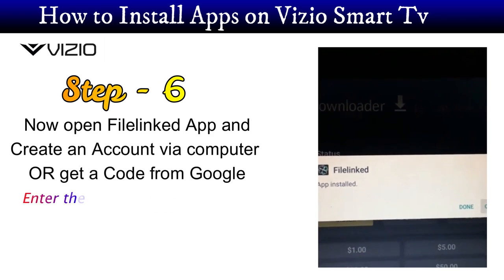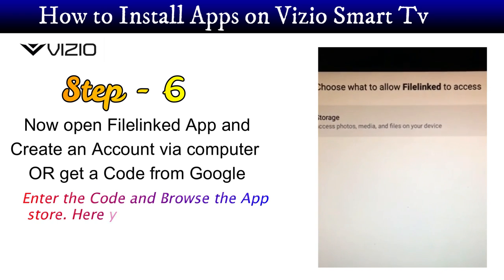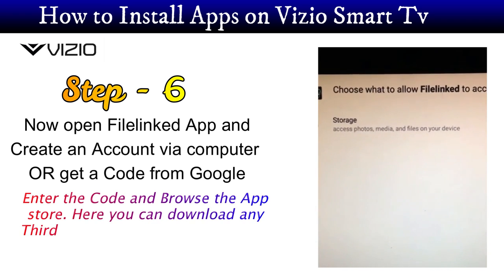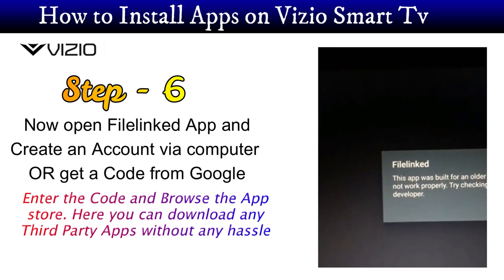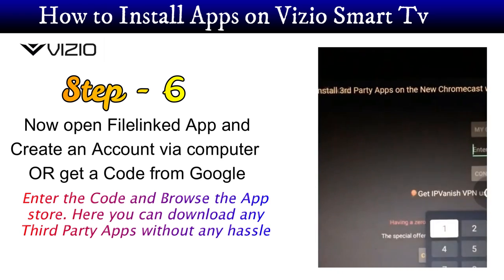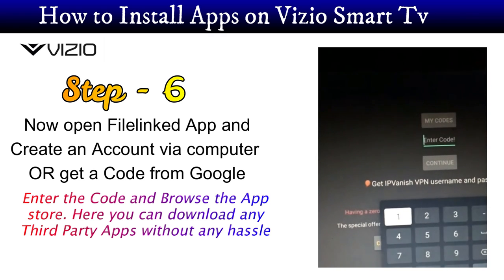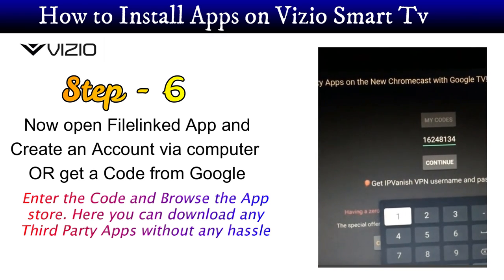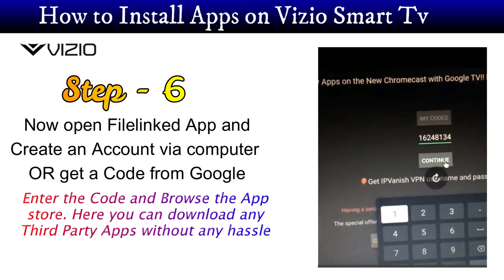Now the next step is to open the File-linked app and create an account via computer or get a code from Google. Enter the code and browse the app store. Here you can download any third-party app without any hassle.